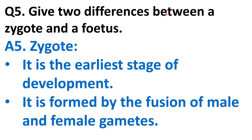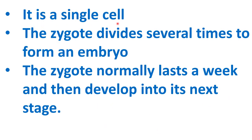Question: give two differences between a zygote and a fetus. Zygote: it is the earliest stage of development, formed by the fusion of male and female gametes. It is a single cell. The zygote divides several times to form an embryo. The zygote normally lasts about a week before developing into its next stage.